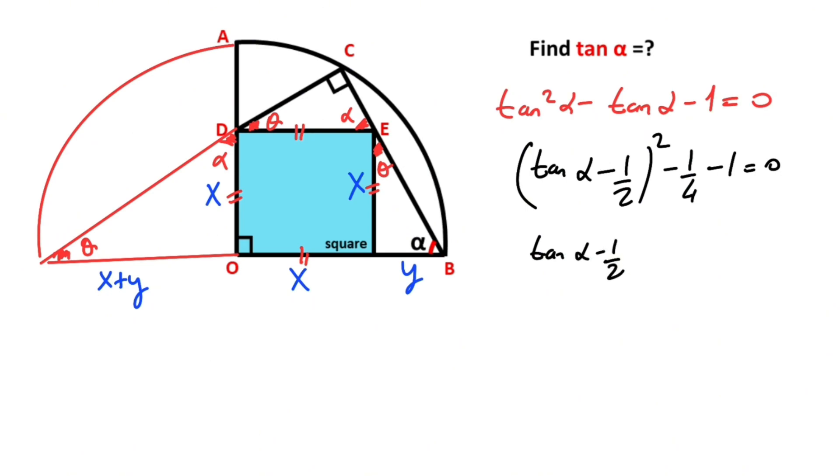So tangent alpha minus one-half, all squared, equals one-fourth plus one. One-fourth plus one equals five-fourths. Take the square root of both sides: tangent alpha minus one-half equals...